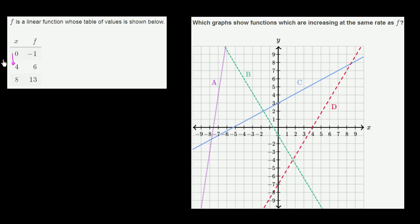When x increases by 4, we have our function increasing by 7. So we could just look for which of these lines are increasing at a rate of 7 fourths, 7 in the vertical direction every time we move 4 in the horizontal direction.